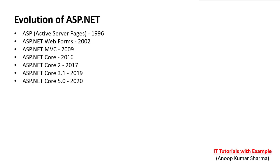As we can see, ASP stands for Active Server Pages and came in 1996. Then in 2002, ASP.NET Web Forms came into the picture. Due to some drawbacks in ASP.NET Web Forms, ASP.NET MVC was released in 2009. In 2016, with the release of the .NET Core framework, ASP.NET Core came into the picture.